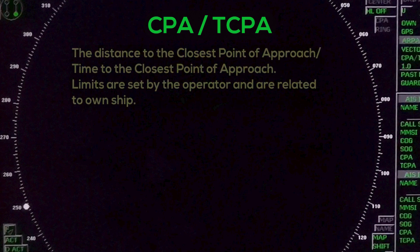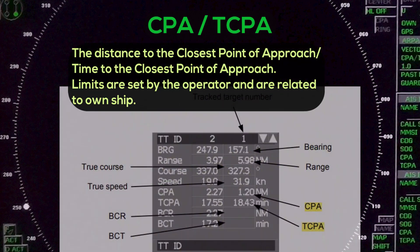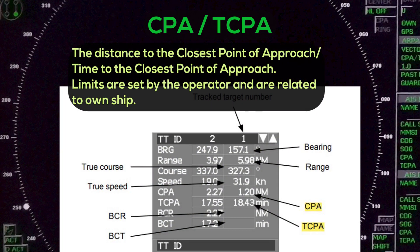CPA / TCPA — Closest Point of Approach / Time to Closest Point of Approach: The distance to the closest point of approach and the time to the closest point of approach. Limits are set by the operator and are related to own ship.